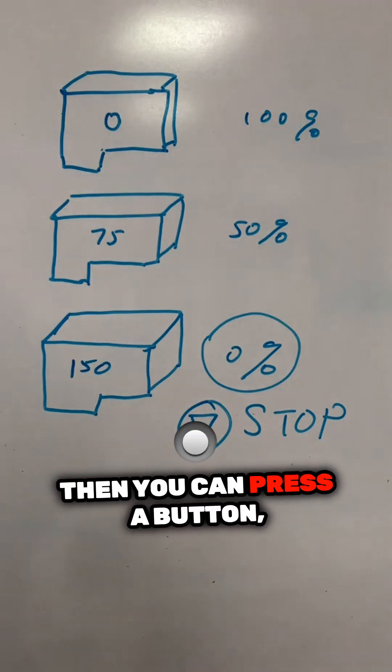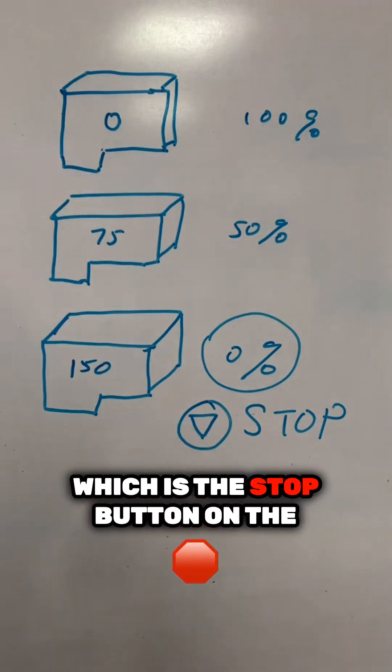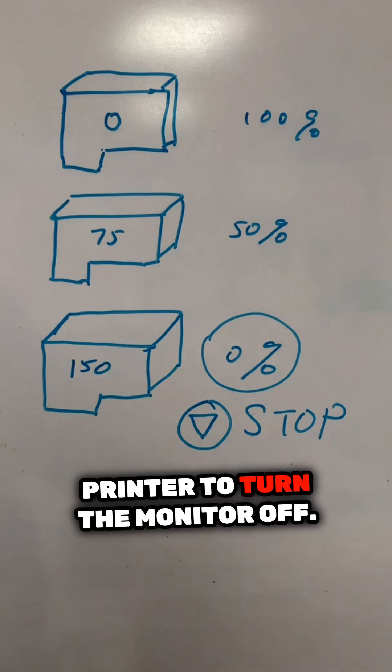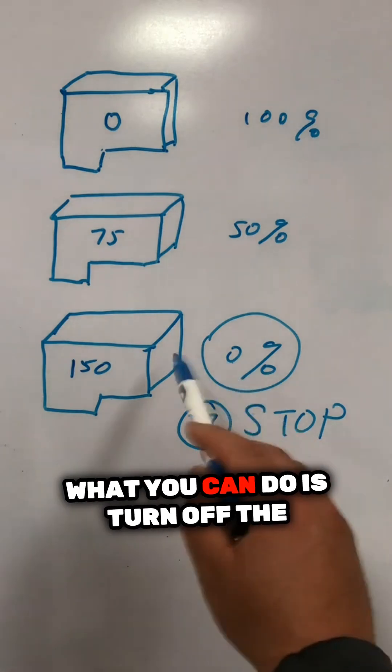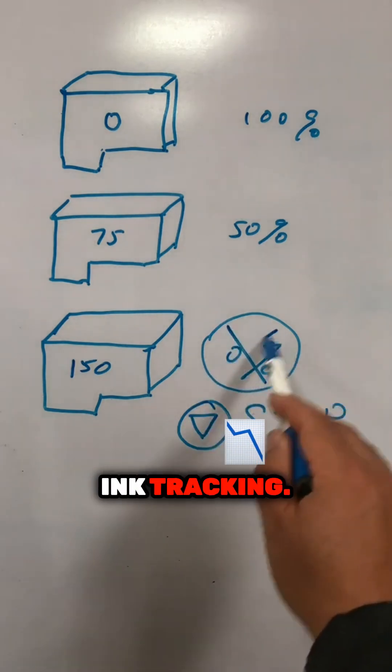Then you can press a button, which is the stop button on the printer, to turn the monitor off. You cannot reset the cartridge. What you can do is turn off the ink tracking.